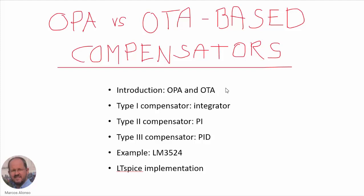We are going to see an introduction regarding the OPA and OTA amplifiers. Then we will see the implementations of the three basic compensators used in closed-loop operation of power electronics converters: the Type 1 integrator, the Type 2 proportional-integral (PI) compensator, the Type 3 or PID proportional-integral-differential compensator. Then we will see an example of an integrated circuit with a built-in OTA compensator, which is the LM3524.